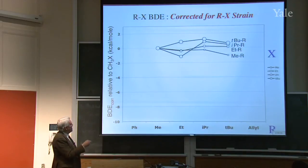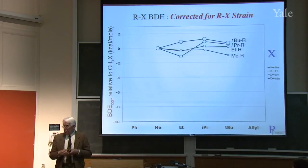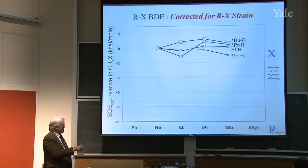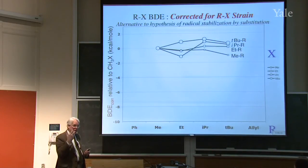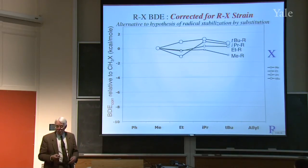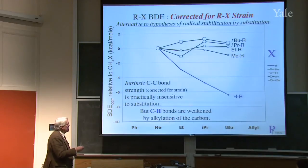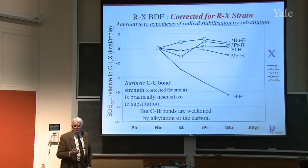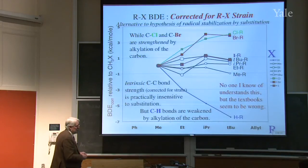After correcting for Rx strain — subtracting starting material strain — there's hardly any difference at all as you go from methyl to ethyl to isopropyl to t-butyl radicals. So this is an alternative to the hypothesis that more substituted radicals are more stable, which is what your books will say. The intrinsic C-C bond strength, corrected for strain, is practically insensitive to radical substitution. But C-H bonds are indeed weakened by alkylation of the carbon, and C-Cl and C-Br bonds go the other way — no one really understands it. The textbooks appear to be wrong, so a word to the wise as you look at different textbooks.